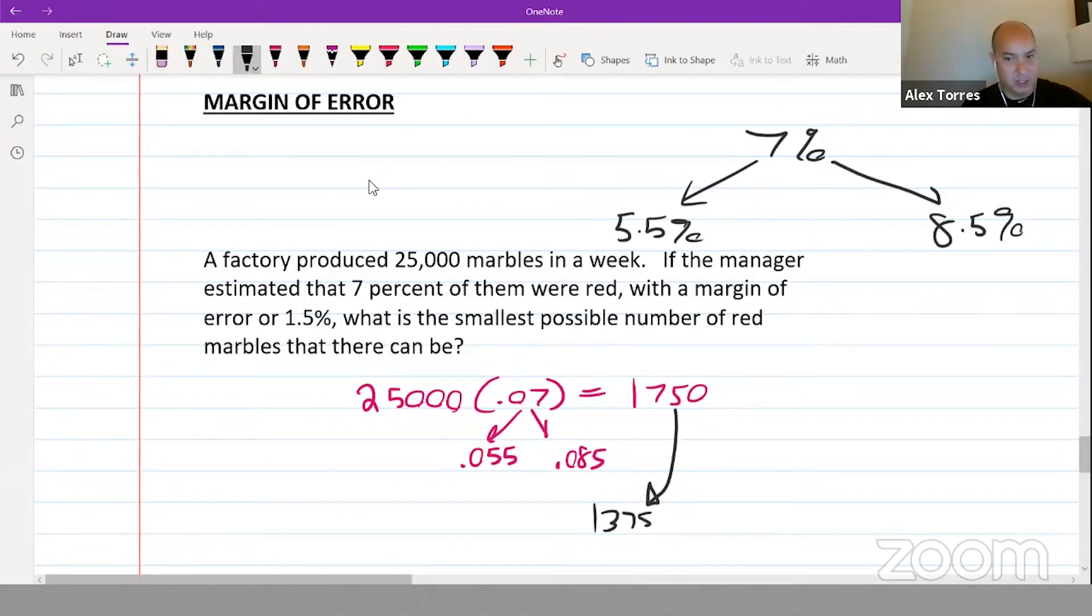That's the smallest possible number of red marbles, but just for deeper understanding, what's 8.5% of 25,000? It's 2,125. So the estimate says there will be 1,750 marbles, but because of the margin of error.